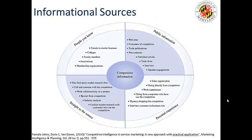So what about informational sources — how can you obtain this information? You can obtain it through public information, personal experience, going straight to the source, and talking to people you know. What you want to do is be organized and have some thoughtful thinking around how you're going to do this. It shouldn't just be happenstance — there needs to be structure, practices, and procedures around how you do this. That's the responsibility of the planning professional.